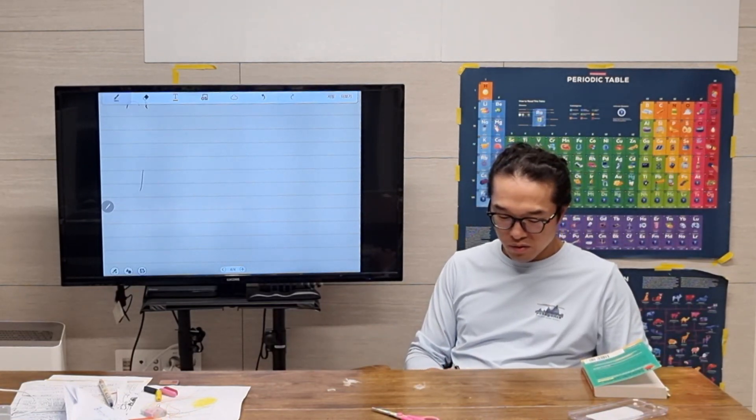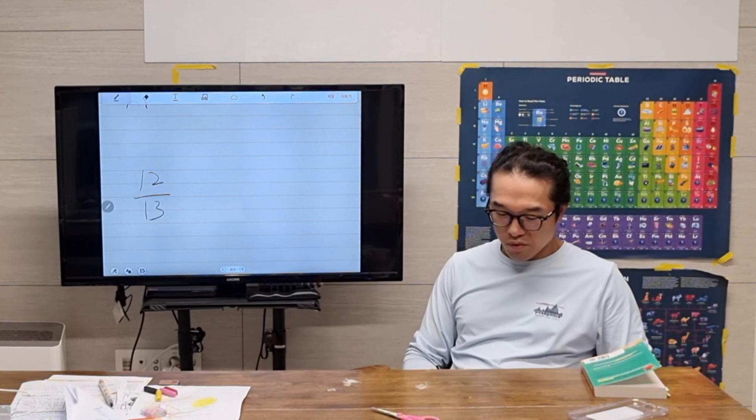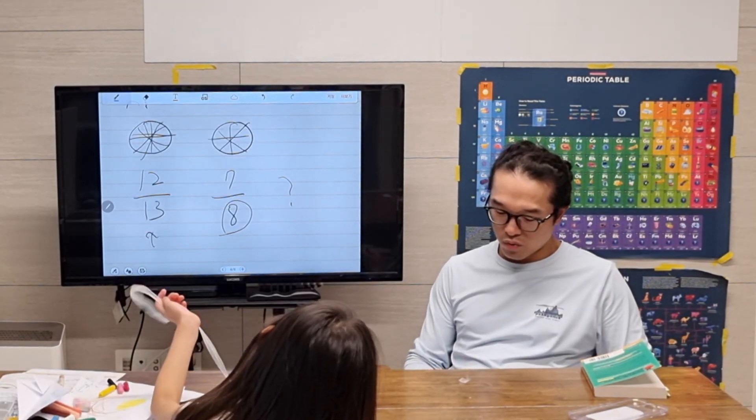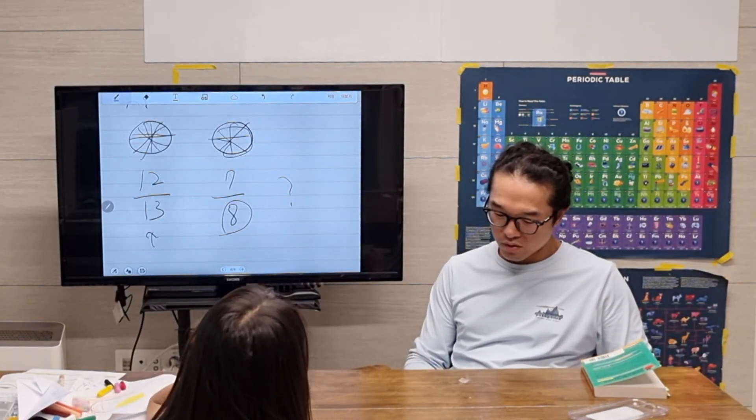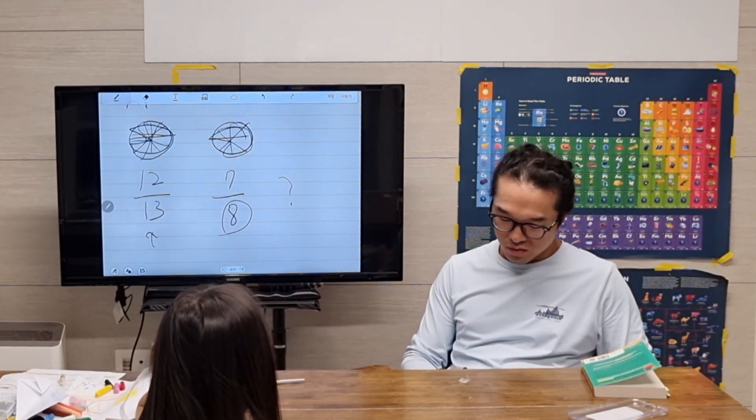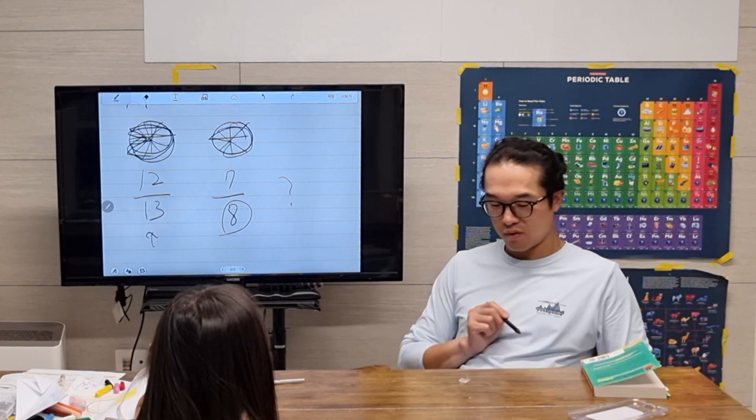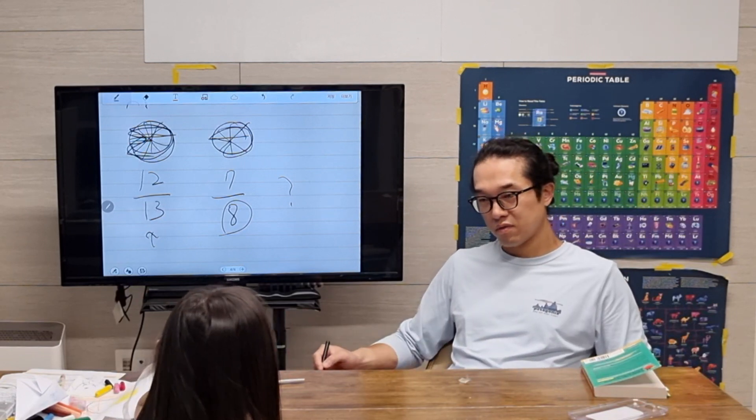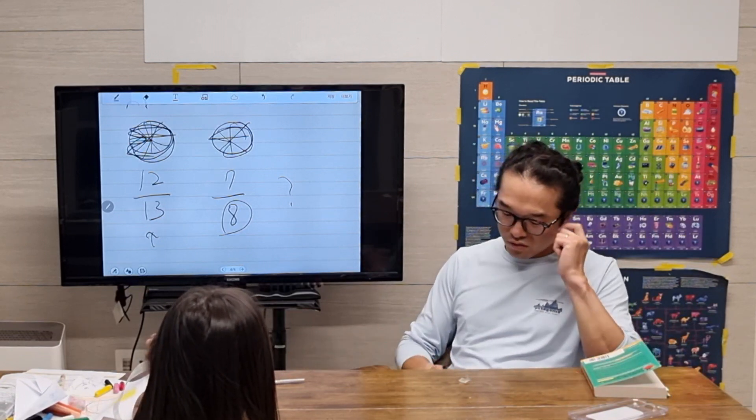So now, which number is bigger? Twelve over thirteen and seven. We chose seven pieces and we chose twelve pieces. Now, which one is bigger then? Twelve. That's right.